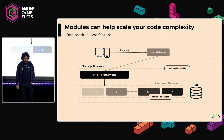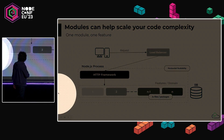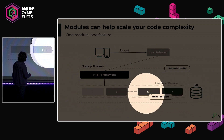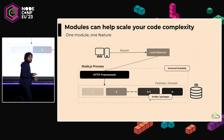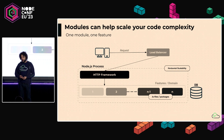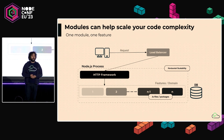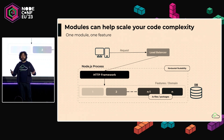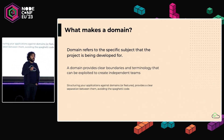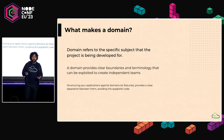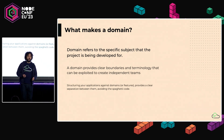The modular monolith tells you: you have your HTTP framework and you split it across a features domain where parts communicate with each other and are somewhat isolated. You could potentially split your application up, move modules around, and have multiple teams working independently. Taking a little lingo from the domain-driven design world, domain refers to the specific subject the project is being developed for — your cart, inventory, catalog, or billing. How many of you like developing billing software?